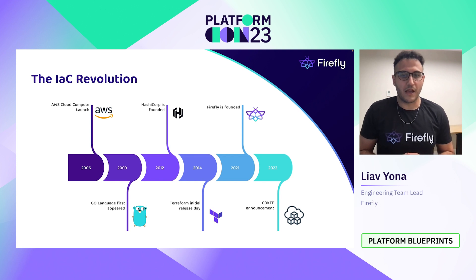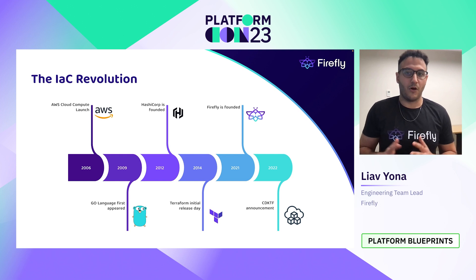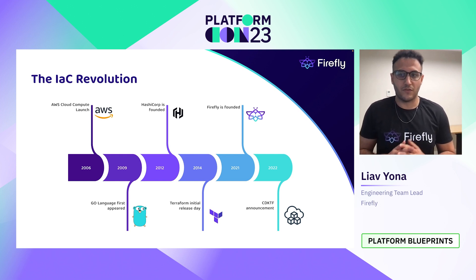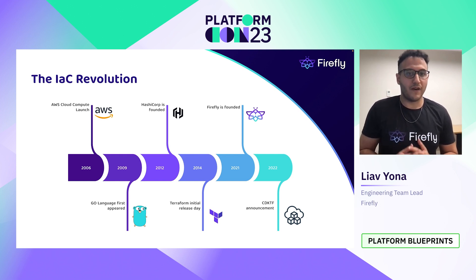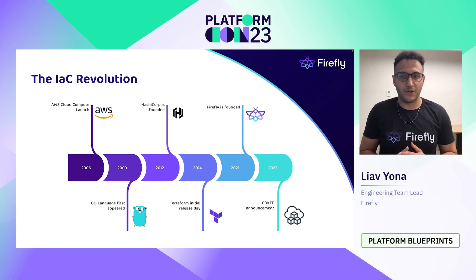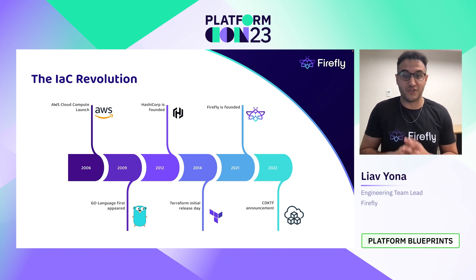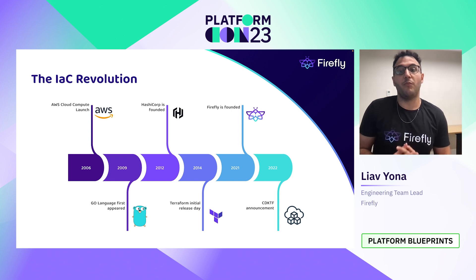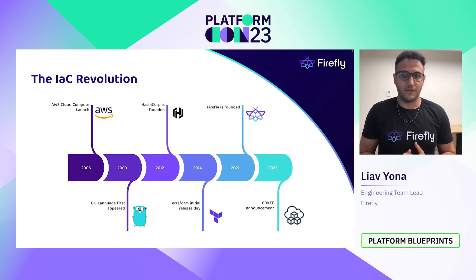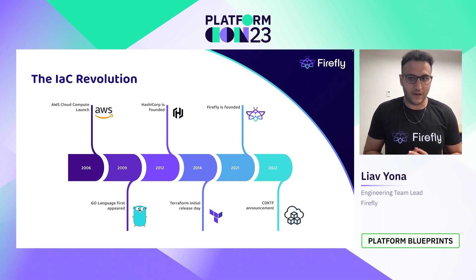Recognizing this opportunity, HashiCorp was founded and created Terraform. As you all know, Terraform is an open source infrastructure as code software where users define and provision data center infrastructure using a declarative configuration language known as HCL, or HashiCorp Configuration Language. With widespread community adoption and contribution, the provider coverage and simplicity, Terraform became the most popular infrastructure as code tool in the industry, providing the first unified infrastructure as code tool.